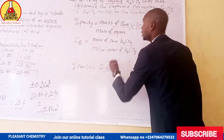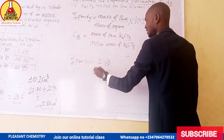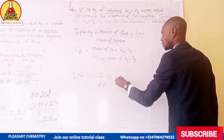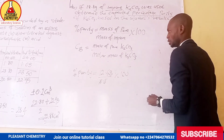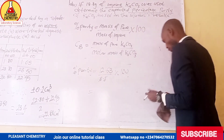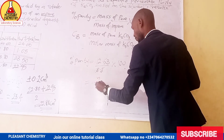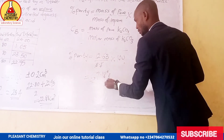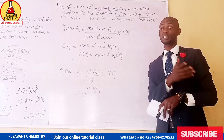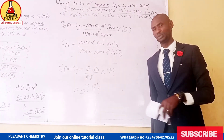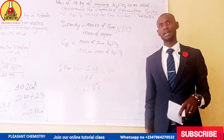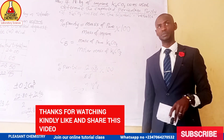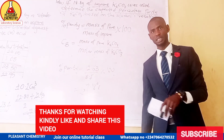Substituting into the percentage purity formula: (pure mass / mass of impure sample) × 100. The mass of the pure K₂CO₃ is approximately 12.63 grams, and the mass of the impure sample is 18.8 grams. When you press your calculator, the percentage purity comes out to approximately 67.18%. This has been a very important video. Please subscribe and share this video with anyone who may need it. See you next week. Thank you.